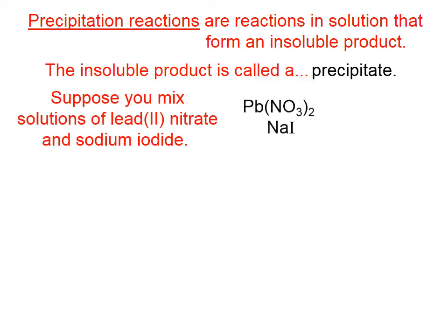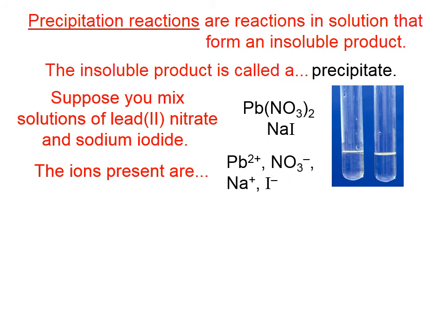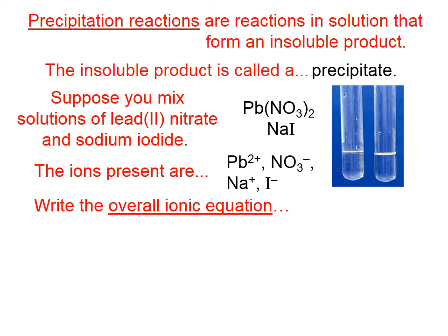Precipitation reactions are reactions in solution that form an insoluble product called a precipitate. Suppose you mix solutions of lead-2-nitrate and sodium iodide. Both of those are soluble — anything with a nitrate ion is soluble, and anything with an alkali metal ion is soluble. They're both clear solutions. The ions present are the lead-2 ion, the nitrate ion, the sodium ion, and the iodide ion.